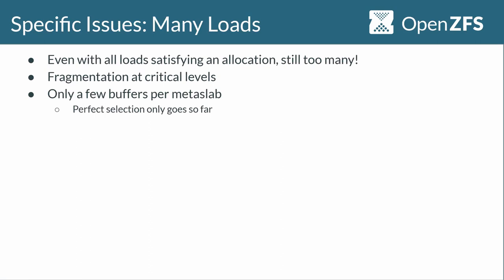Customers were still seeing problems even after this fix. Even with every load satisfying an allocation, we were still doing a lot of loads. The fragmentation was at critical levels — there just weren't enough free segments that could satisfy the allocations we were trying to do in any given metaslab. Even always picking the very best metaslab, there weren't enough large free regions, and loading them is very expensive, so we were still running into huge performance problems.